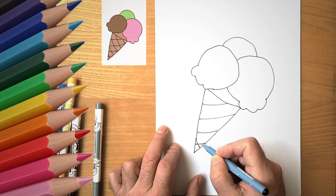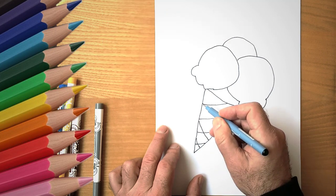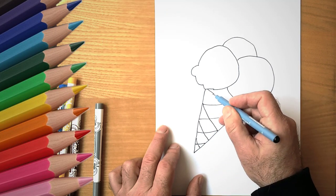Now let's draw the lines perpendicular to the first lines but parallel to each other. Now it's time to paint our ice cream balls.